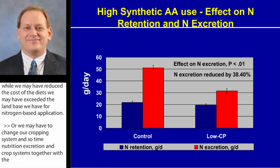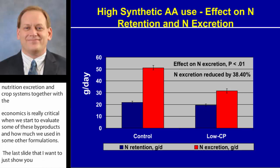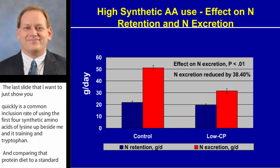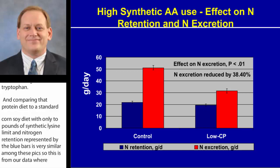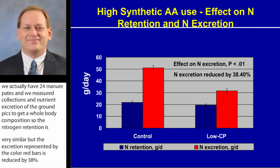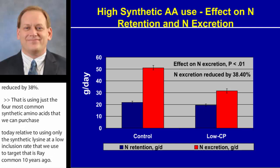The last slide shows a common inclusion rate of the first four synthetic amino acids — lysine, methionine, threonine, and tryptophan — comparing a low crude protein diet to a standard corn-soy diet with only two pounds of synthetic lysine. Nitrogen retention, represented by the blue bars, is very similar between these pigs. But the excretion, represented by the red bars, is reduced by 38% using just those four most common synthetic amino acids available today versus only using synthetic lysine at the low inclusion rate common 10 years ago. In 10 years, we've substantially reduced nitrogen excretion just by using synthetic amino acids within a corn-soy-based diet.